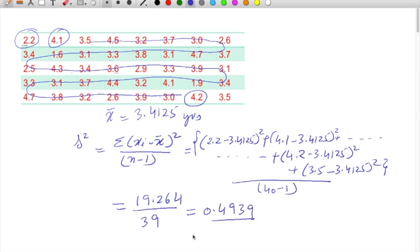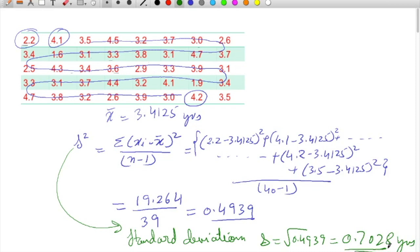And from this, if we have to find out the value of standard deviation s, then square root of 0.4939 will give you a value of 0.7028 years. So this was the procedure to calculate standard deviation.